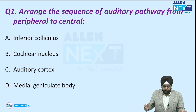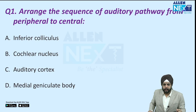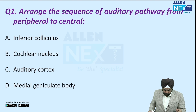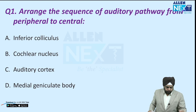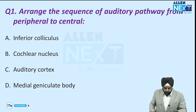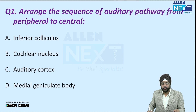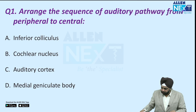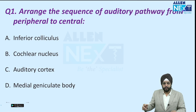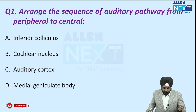The first question — and this is a repeat question — is: arrange the sequence of artery pathway from peripheral to central. This question has been asked multiple times. And the best thing about this question in this exam is that it got repeated twice — so one question, double the number of marks.